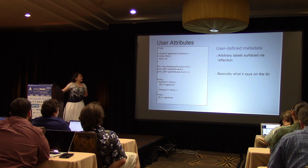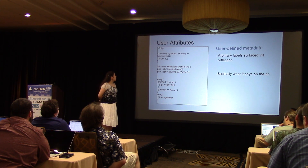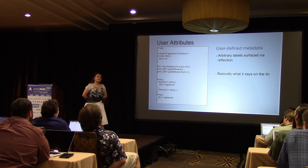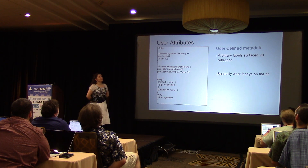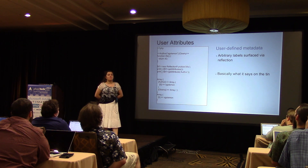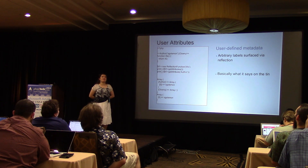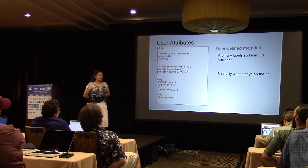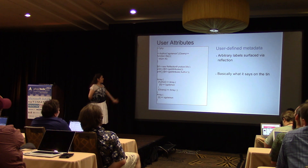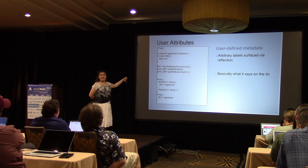Then we have user attributes — user-defined metadata. Kind of like annotations. Of course, if people are using reflection in production code, I'm usually an unhappy camper. It's faster in HHVM, but in PHP — even in 5.4 where it's better than it was — it's still not something you want doing on all your pages. It's slow and a memory hog. But this just gives you a bunch of additional information and is really useful for things like documentation.